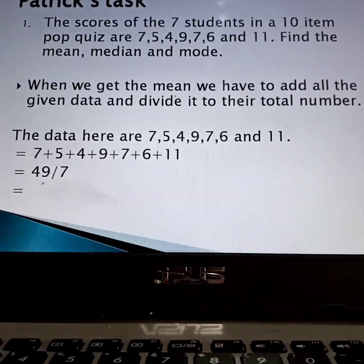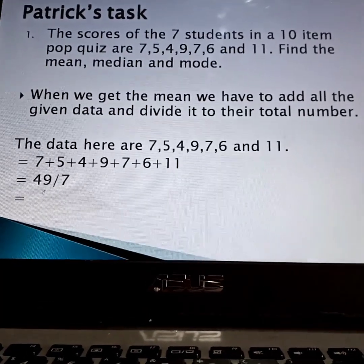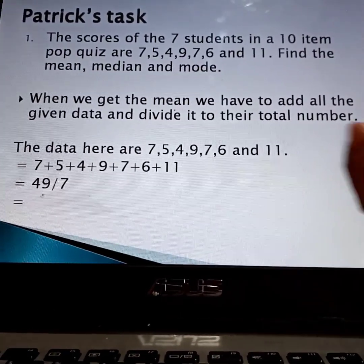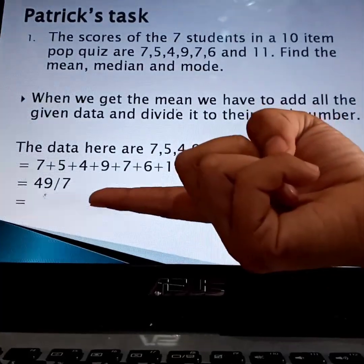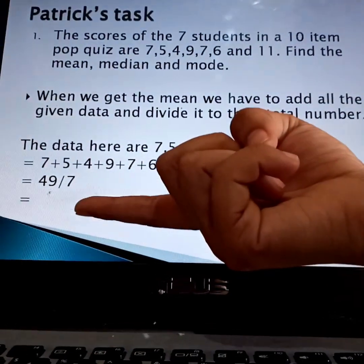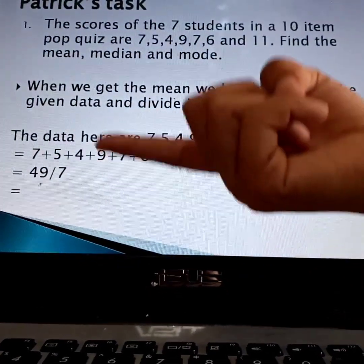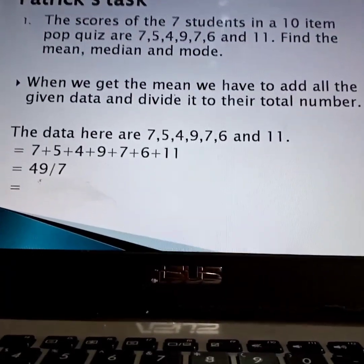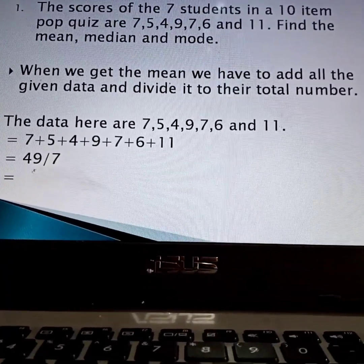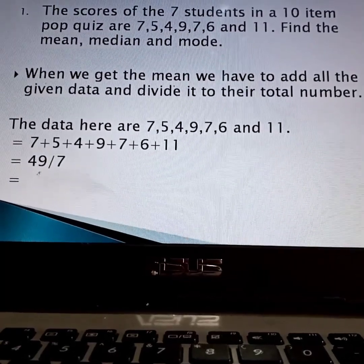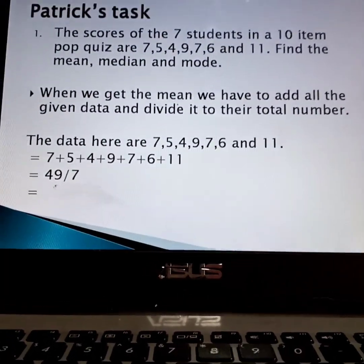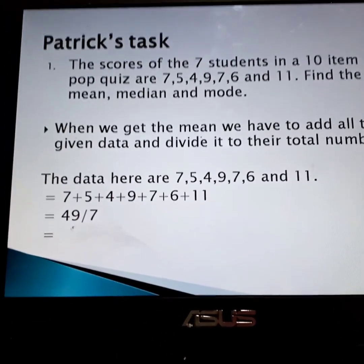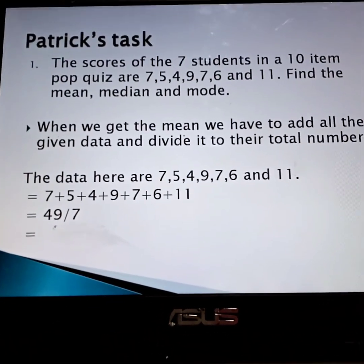Who would like to try to answer number one? Ms. Michelle. What is your answer? Good job — you will add all the data to get 49, then divide by 7. 49 divided by 7 gives you 7. So how do we get the mean? Dave: you add all the data and divide it by the number of data. Very good.